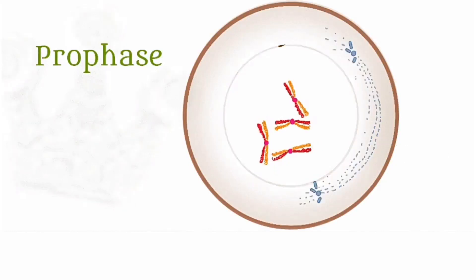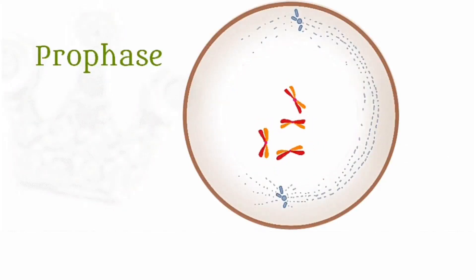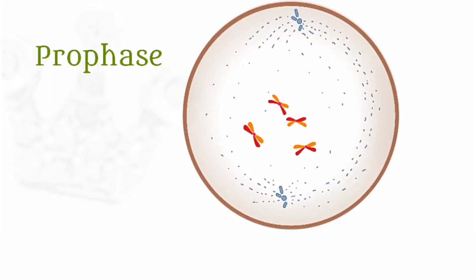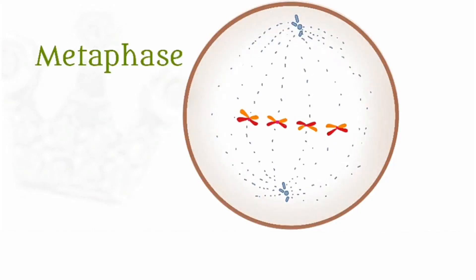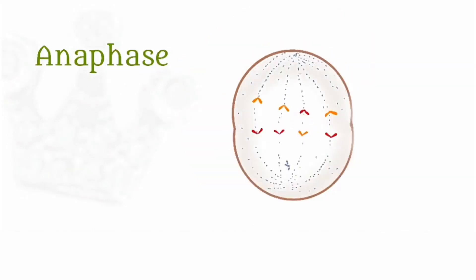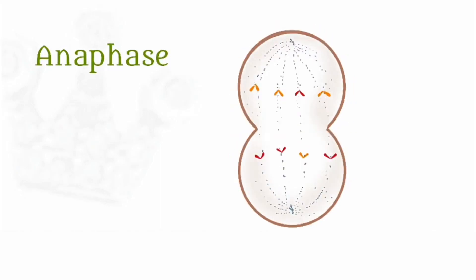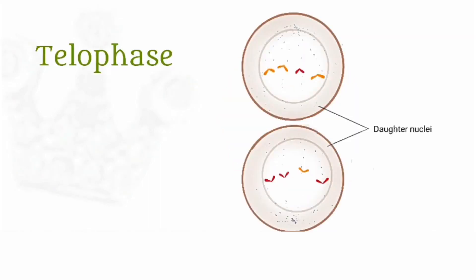Then comes the metaphase where the chromosomes are lined up in the equatorial plane. In the anaphase, the centromere splits so that the chromatids separate and become independent chromosomes, and cell membrane separation takes place. Finally, in the telophase, the daughter nuclei form and the nuclear membrane reappears.